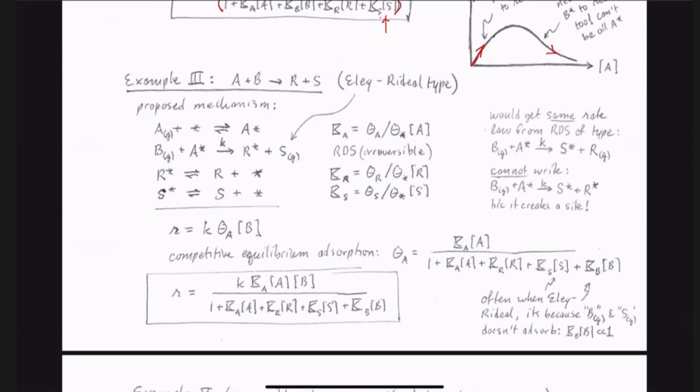Let's do the Eley-Rideal-type mechanism now. Same overall stoichiometry. We have A plus B goes to R plus S. But in this case, we're going to propose a rate-determining step that is of Eley-Rideal-type instead of Langmuir-Hinshelwood-type. B is not going to be on the surface. We're going to have an adsorption of A right here. We're going to have no adsorption of B. It comes directly from the gas phase and reacts to the surface A. A surface R species and an S gets released into the gas phase. Now S, we're going to assume, can come back onto the surface. It can come back onto the surface and make an S adsorbate. Also R can come back on the surface or off the surface to make adsorbate, so free R species. So these are all the equilibria that we have to deal with. One, two, three. And this is our rate-determining step.